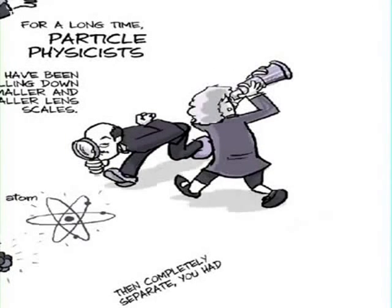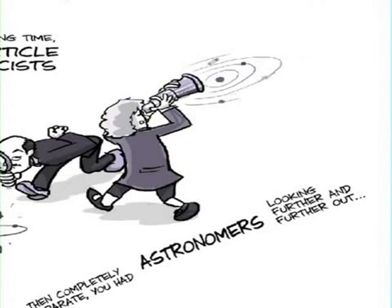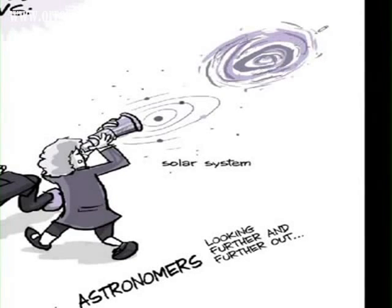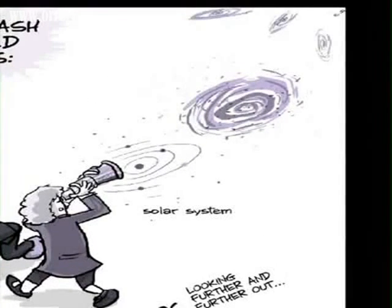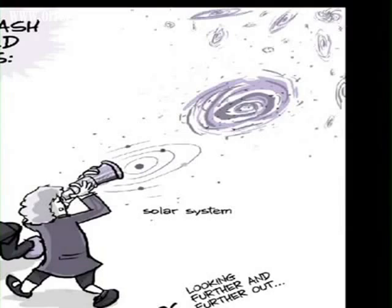And then, completely separate, you have people looking farther and farther out. So first you look and you see the solar system. Then you go out and you see the galaxies and you see extragalactic stuff. You know, we're just one galaxy in the whole universe.